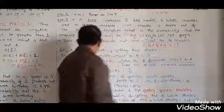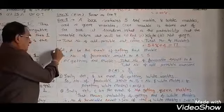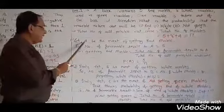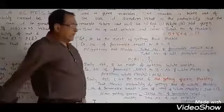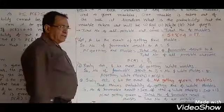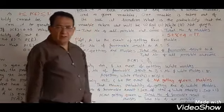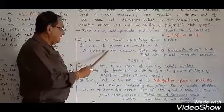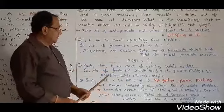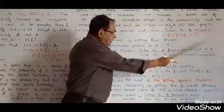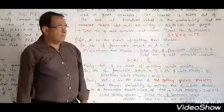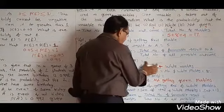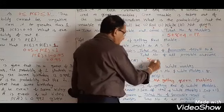Total outcomes = 17. Let A be the event of getting a red marble. Number of favorable results equals number of red marbles, which is 5. Probability of getting a red marble equals number of favorable results upon total number of all possible outcomes, which is 5 upon 17.